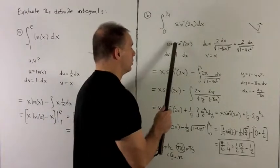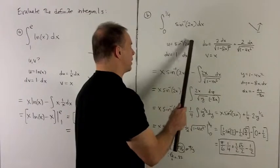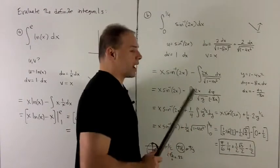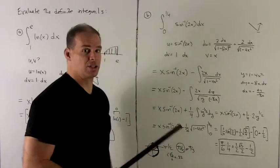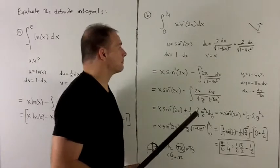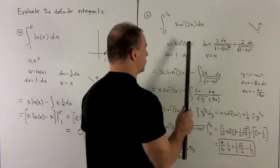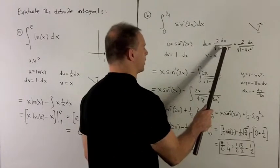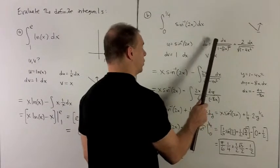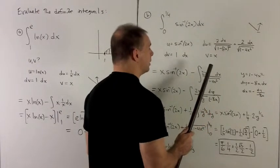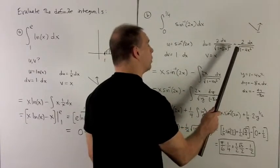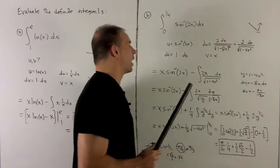Taking the derivative of u, we follow the inverse trig rule. The derivative of sine inverse of box is 1 over radical 1 minus box squared, with the derivative of box on top. Since box is 2x, we put 2x in the bottom under the radical, and the derivative of 2x is 2, so that goes on top. Cleaning it up: du equals 2 dx over radical 1 minus 4x squared.